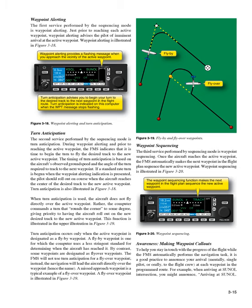Waypoint sequencing: the third service performed by sequencing mode is waypoint sequencing. Once the aircraft reaches the active waypoint, the FMS automatically makes the next waypoint in the flight plan sequence the new active waypoint. Awareness — making waypoint callouts: to help you stay in touch with the progress of the flight while the FMS automatically performs the navigation task, it is a good practice to announce your arrival — mentally if single-pilot, or orally to the flight crew — at each waypoint in the programmed route.